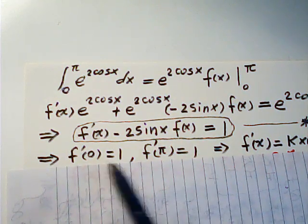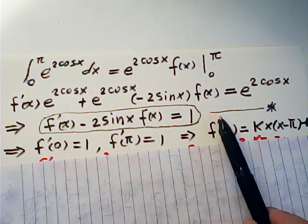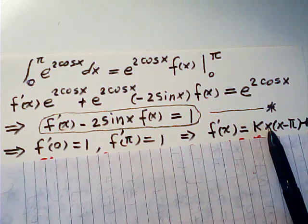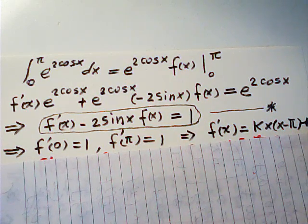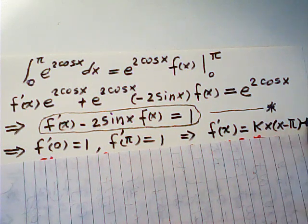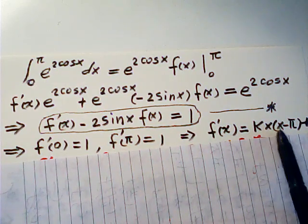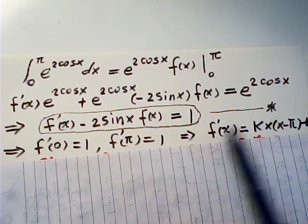From these two we can have f prime of x is equal to k times x times (x minus pi) plus one. Because when x equals zero, this is equal to one. When x equals pi, this is equal to one.